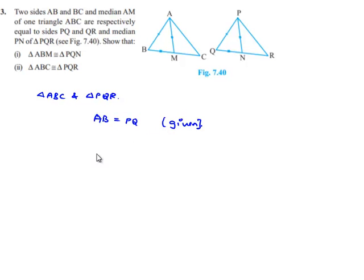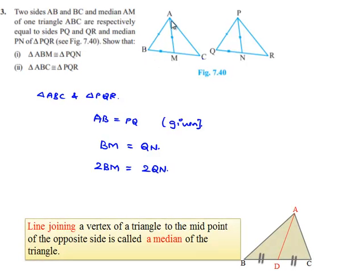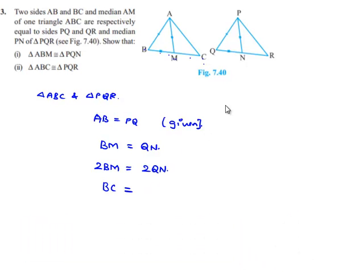Now, since BM is equal to QN, multiplying both sides by 2, we get 2BM equal to 2QN. Since AM is a median, M divides BC in the ratio 1:1, so 2BM equals BC. Similarly, since PN is a median in triangle PQR, N divides QR in the ratio 1:1, so 2QN equals QR. Therefore, BC is equal to QR.